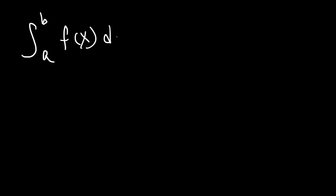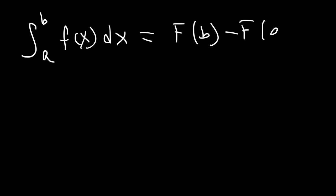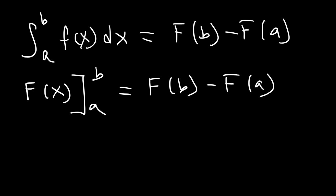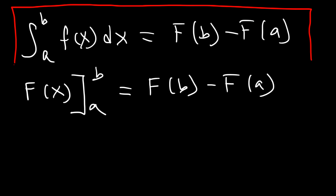The definite integral of f from a to b is equal to F of b minus F of a, where capital F is the antiderivative of lowercase f. This bracket notation is the same as F of b minus F of a. Let's apply FTC Part 2 — the second part of the Fundamental Theorem of Calculus — to evaluate definite integrals.